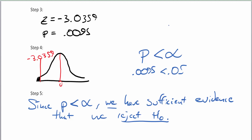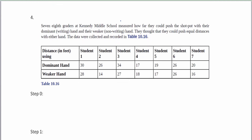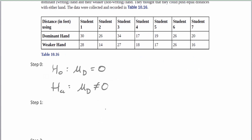The last problem doesn't say 'before and after' — there are a lot of twists. We have eighth graders who were tested on how far they could do a shot put with their dominant hand and their weaker hand. They thought they could push equal distances with either hand, which sets up our hypotheses: the null is that the differences are zero, and the alternative is that the differences are not zero — a two-tail test. The order of subtraction doesn't matter here.